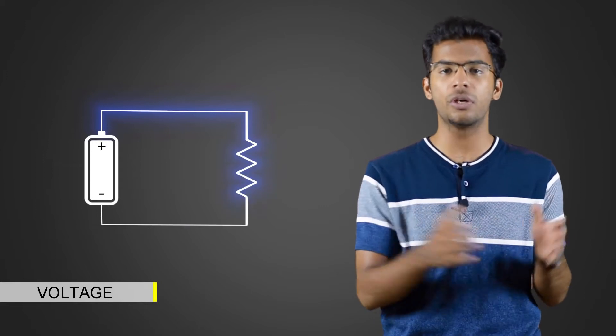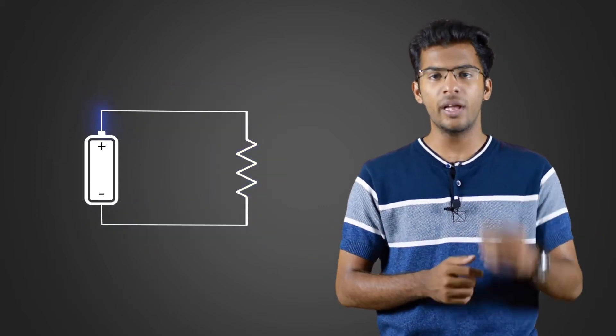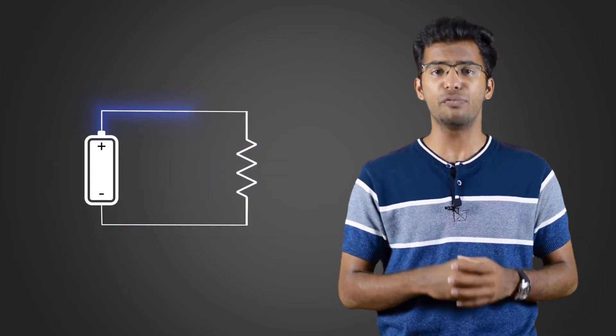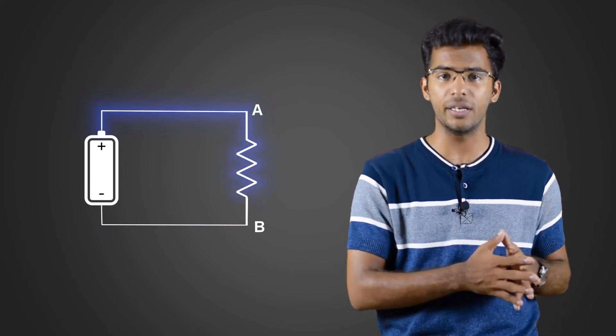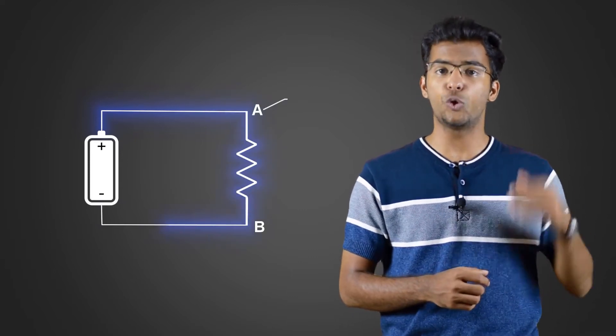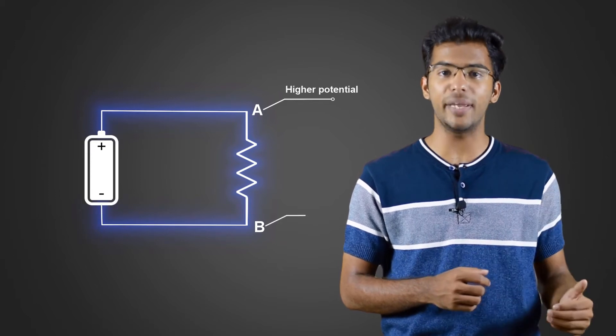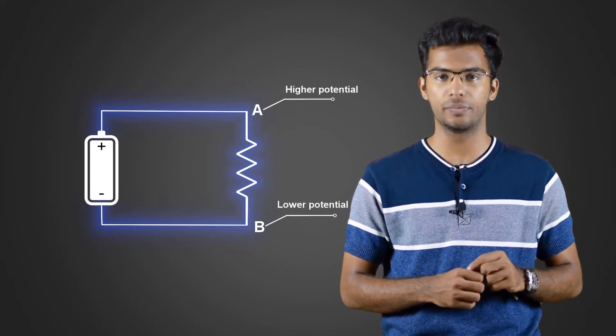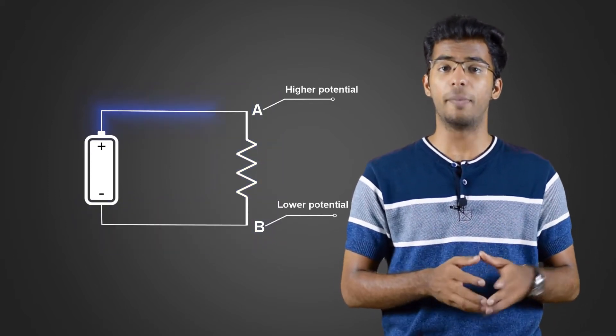If the current flows from point A to point B, we consider A to be at higher potential and B to be at lower potential. If the current moves from higher potential to lower potential, it is called potential rise.